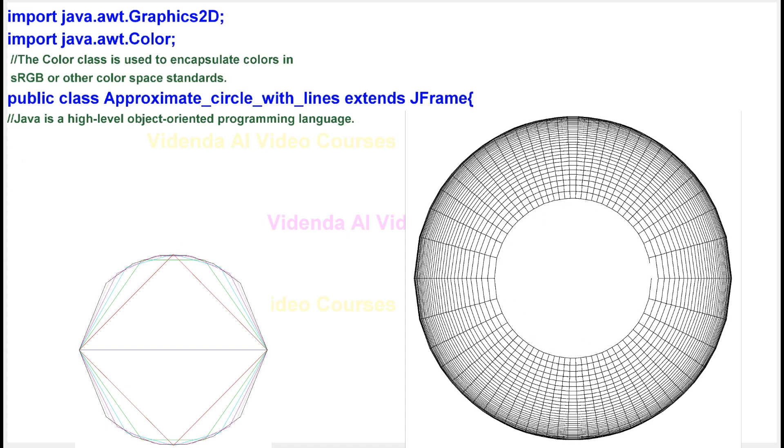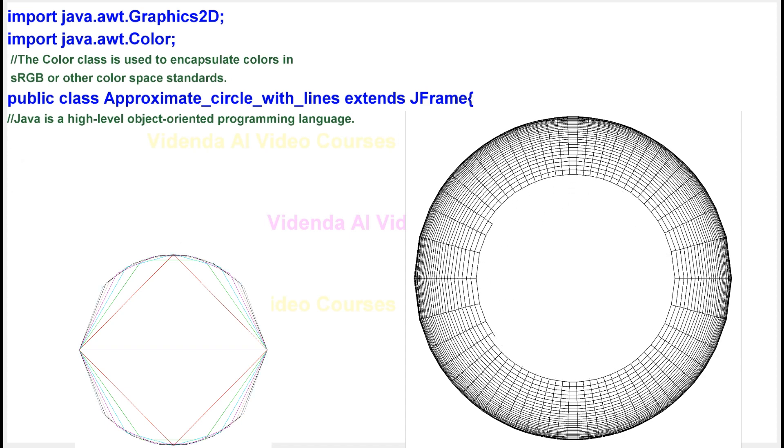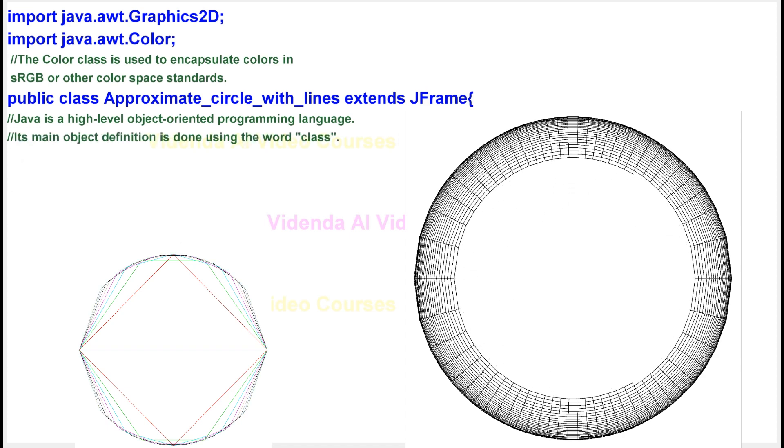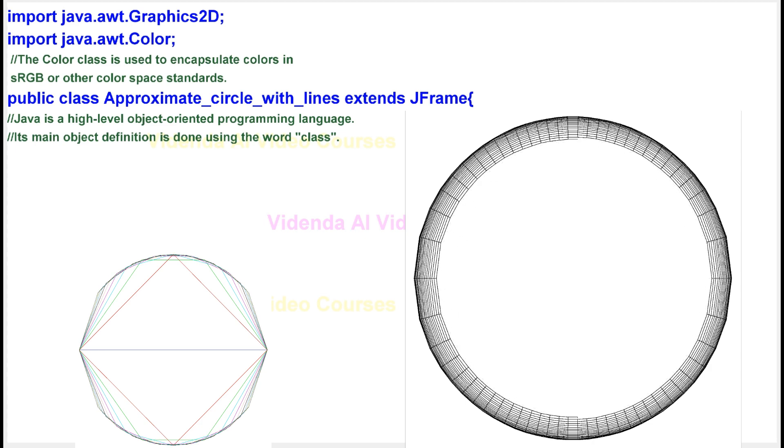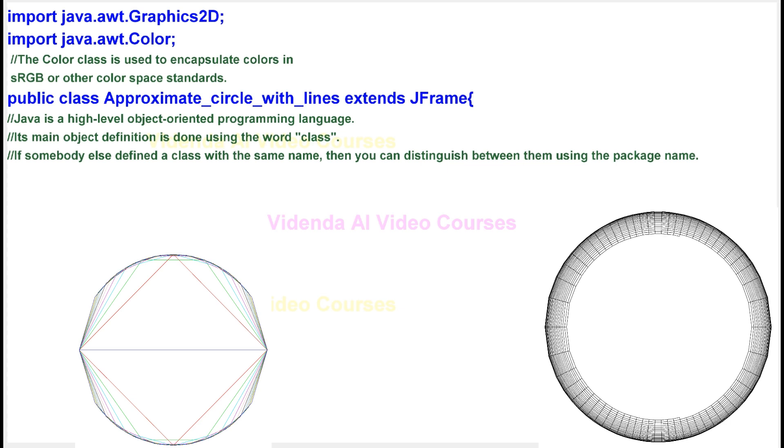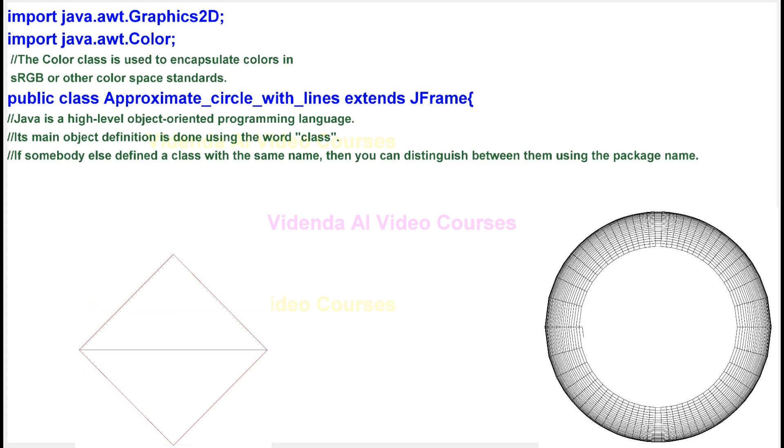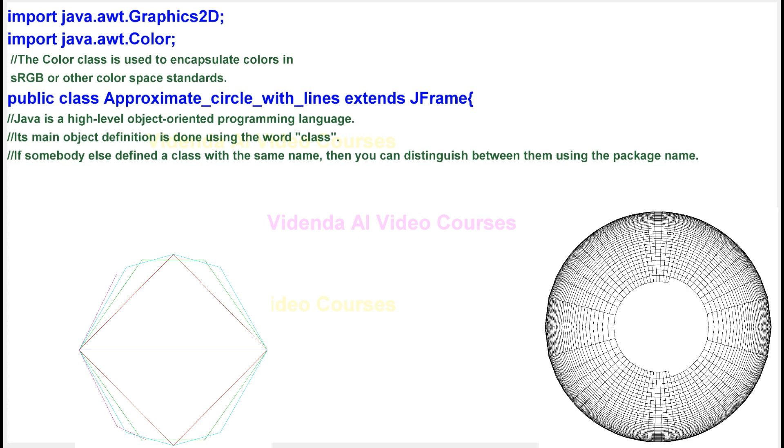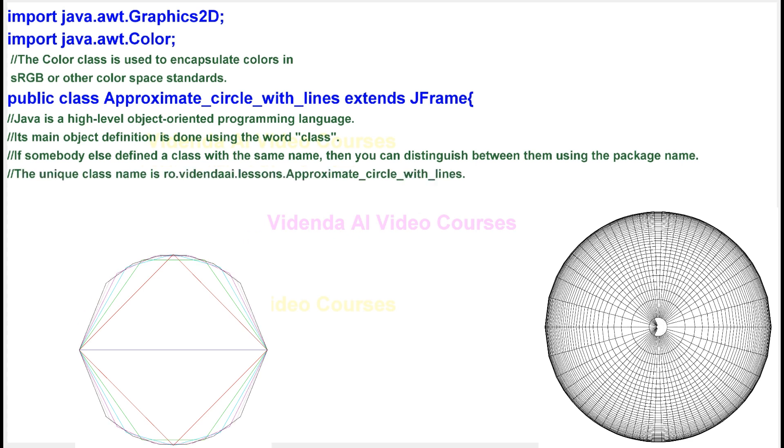Java is a high-level object-oriented programming language. Its main object definition is done using the word class. If somebody else defined a class with the same name, then you can distinguish between them using the package name. The unique class name is ro.videndai.lessons.Approximate_circle_with_lines.